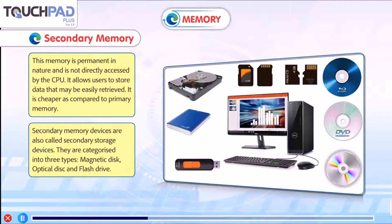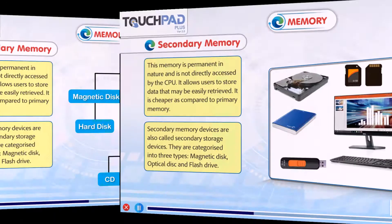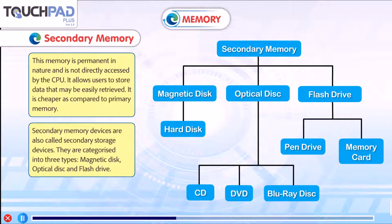Secondary storage devices are categorized into three types: Magnetic disk, Optical disk, and Flash drive. You can see this in the diagram. Magnetic disk example is hard disk. Optical disk examples are CD, DVD, and Blu-ray disk. Flash drive examples are pen drive and memory card.